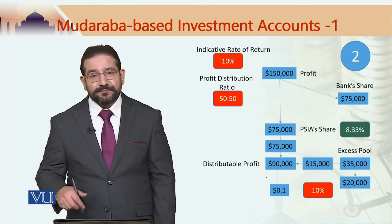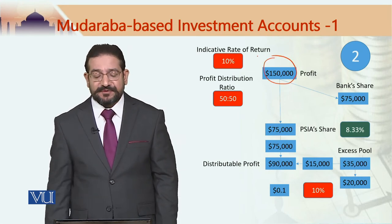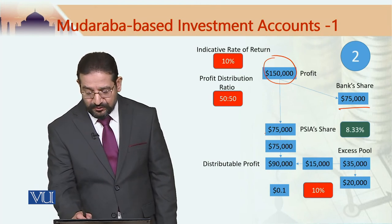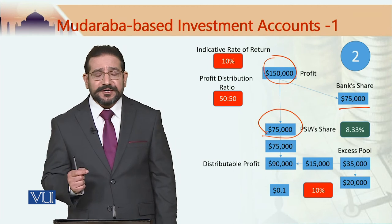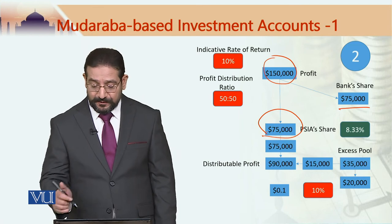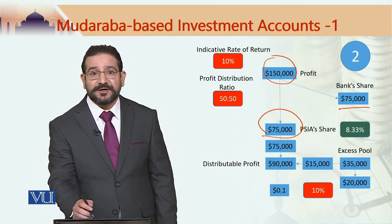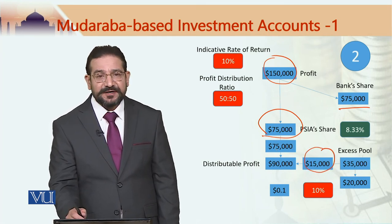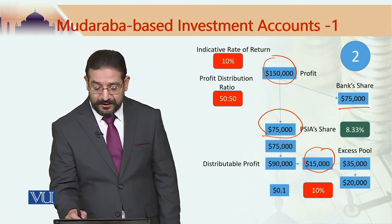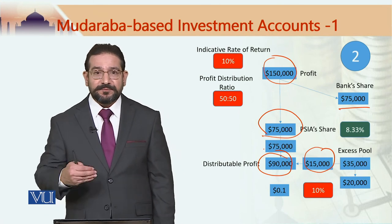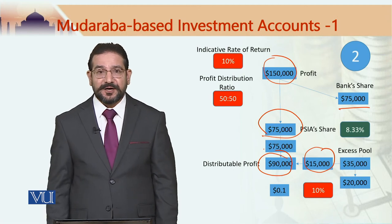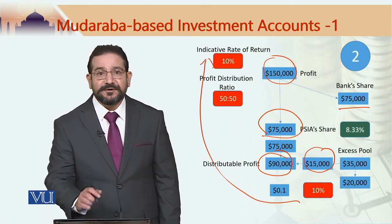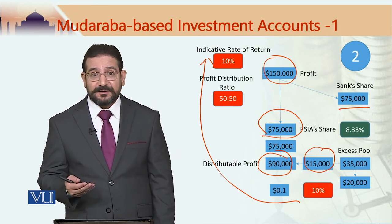Next, if the profit generated by the Mudaraba pool's investments was only 150,000, then the bank's share would be 75,000 and the profit sharing investment account holders' share would be 75,000, which is a rate of return of 8.33 percent — less than the indicative rate of return of 10 percent. In this case, the bank would draw 15,000 from the excess pool, making the total 90,000 to be distributed amongst the profit sharing investment account holders, which equals the 10 percent indicative rate of return as displayed by the bank in the public domain.